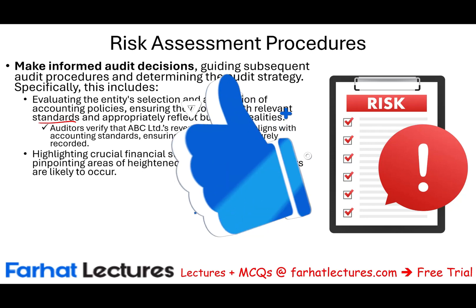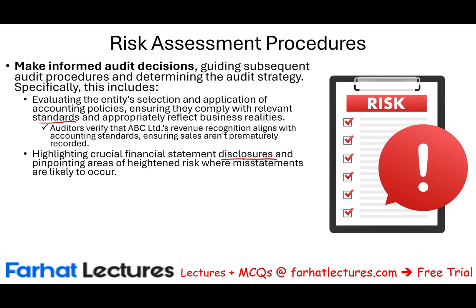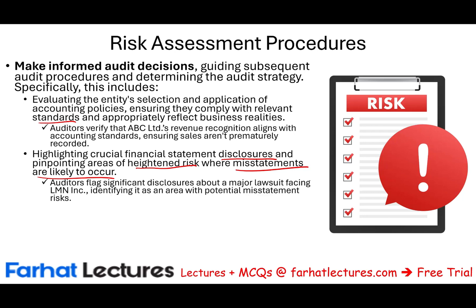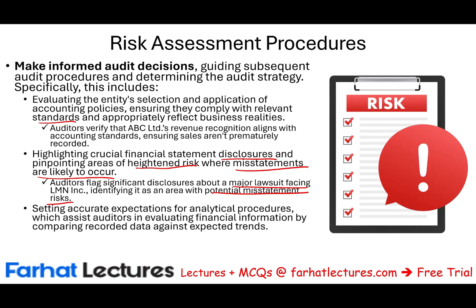Also, we want to highlight crucial financial statement disclosures and pinpoint areas of heightened risk where misstatements are likely to occur. It means look ahead of time — you're going to have to make disclosures, so plan to see which areas are subject to higher risk. For example, the auditor might flag a significant disclosure about a major lawsuit facing the company, identifying it as an area with potential misstatement risk. This means we have to allocate more resources or more senior staff to that event.